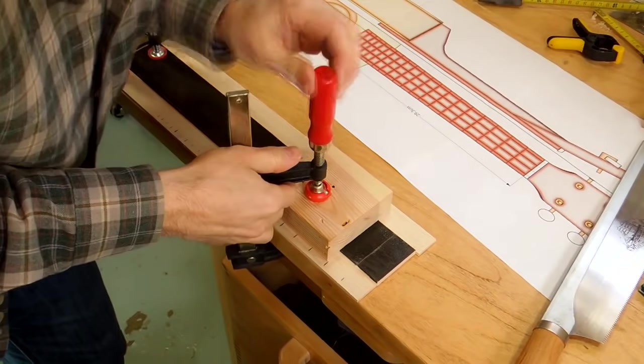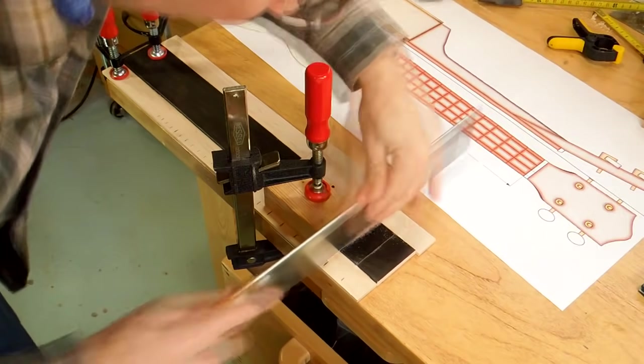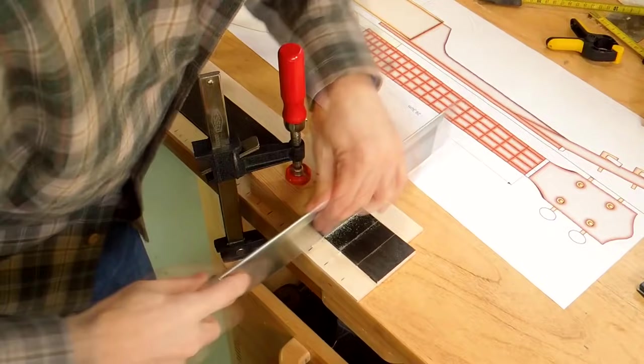I'm cutting the fret slots using my Japanese Dozuki saw and a block of wood to help guide it. I have a strip of wood on either side of the fretboard. And once the saw starts cutting into that strip of wood I know I've cut deep enough.